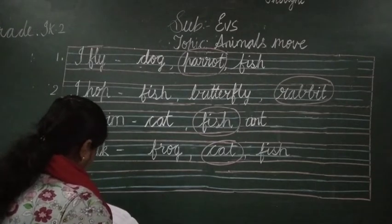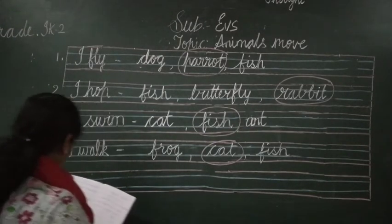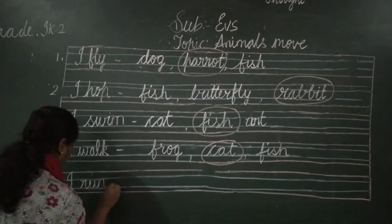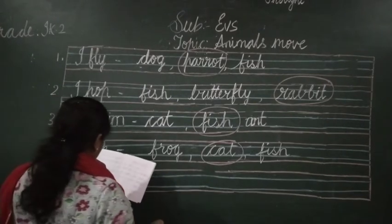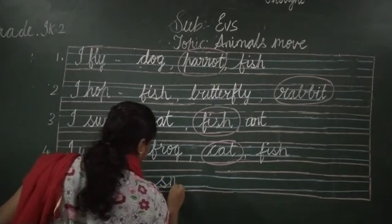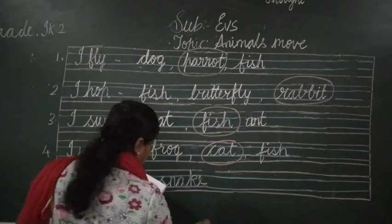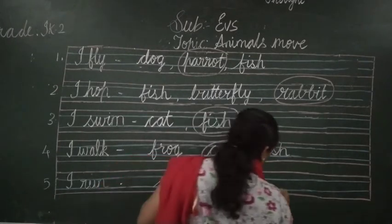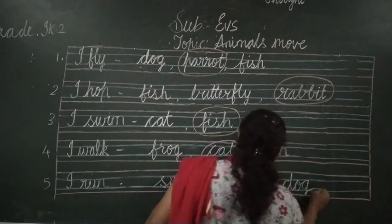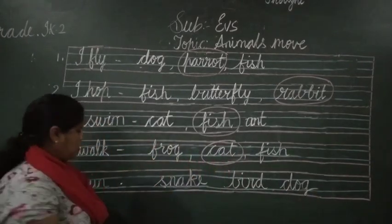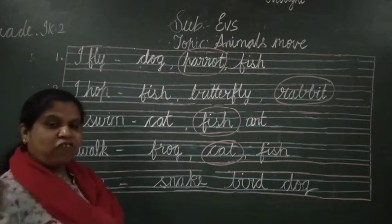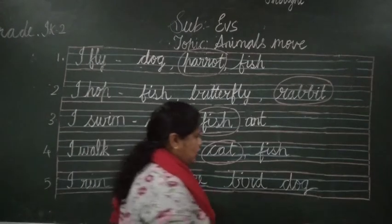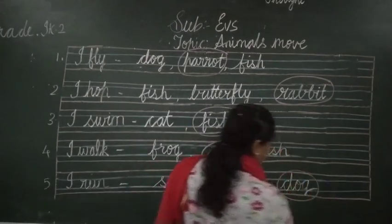Coming to the last one: 'I run.' The options are snake, bird, and dog. Snake crawls, so it can't run. Bird flies. Dog runs - you have seen the dog running. So you have to circle dog.